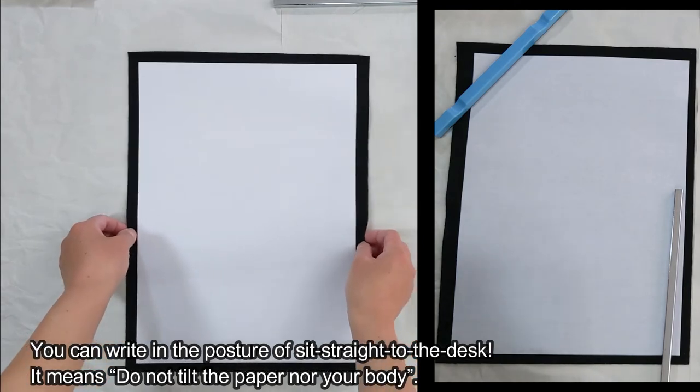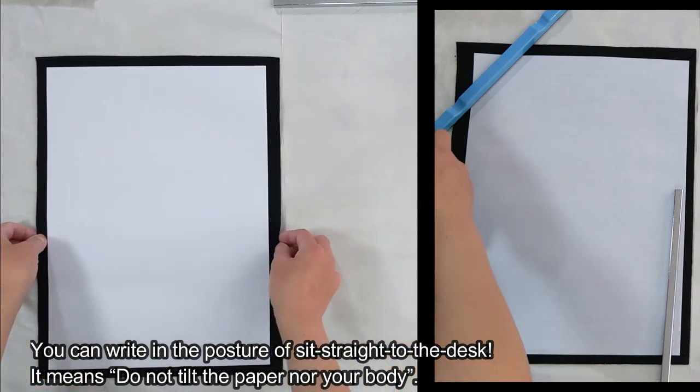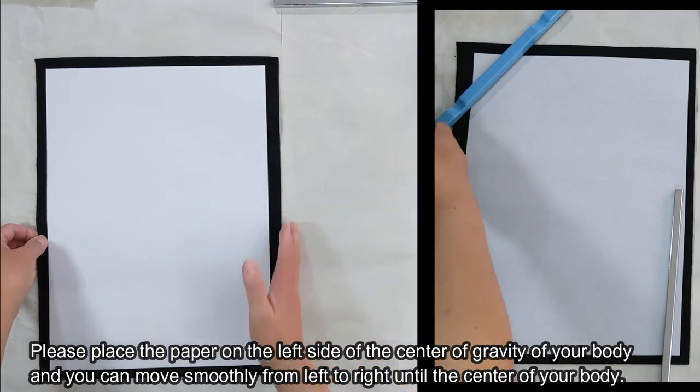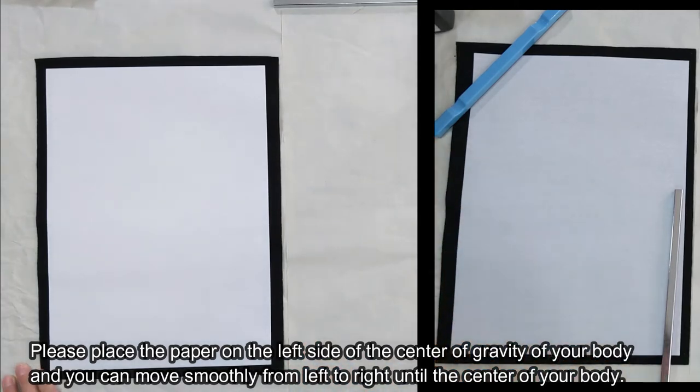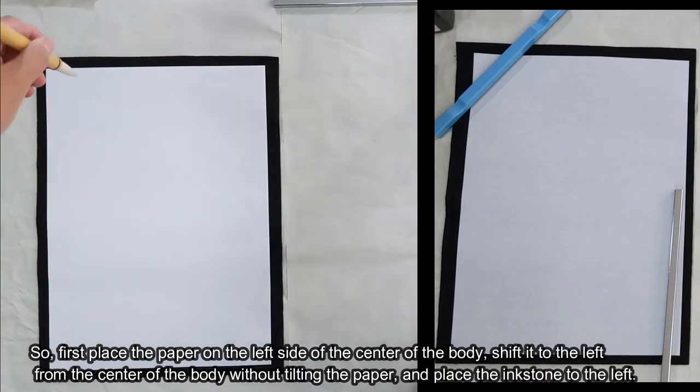You can write in the posture of sit straight to the desk. It means do not tilt the paper nor your body. Place the paper on the left side of the center of gravity of your body and you can move smoothly from left to right until the center of your body.